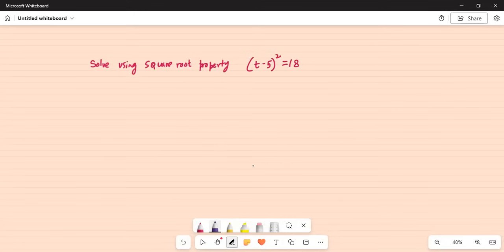Solve using square root property (t-5)² = 18. So we can write this as, let's start from here, t minus 5 square equal to 18, which can be written as 9 times 2.